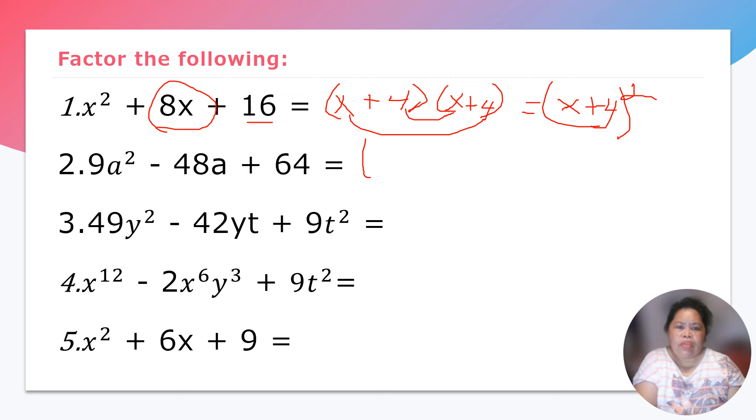Next. So we have here 9a squared minus 48a plus 64. So the factors of 9a square, we have 3a. And then we have 64. 64 is a perfect square with factors of a positive and negative 8, or both negative, negative 8. So 8 times 3 is 24, 24 plus 24 is 48. So both negative 8, that is 3a minus 8 square. Got it?